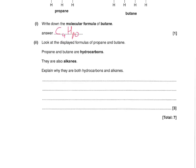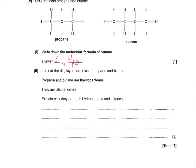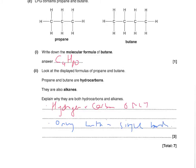Look at the displayed formulas of propane and butane. Propane and butane are hydrocarbons. They're also alkanes. Explain why they're both hydrocarbons and alkanes. For hydrocarbons: you've got to say that they contain hydrogen and carbon only — that's your first mark, and the word only is important for the second mark. For the alkanes part: you can say that they only have single bonds. So hydrogen and carbon only, and only contain single bonds — that gets all three marks.